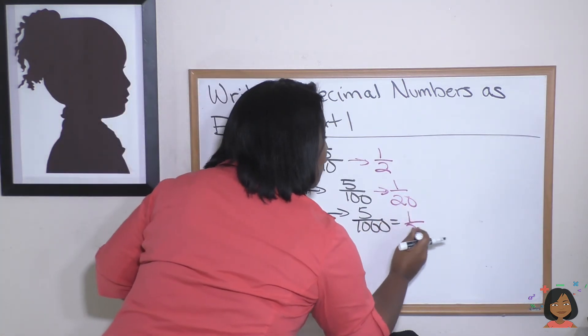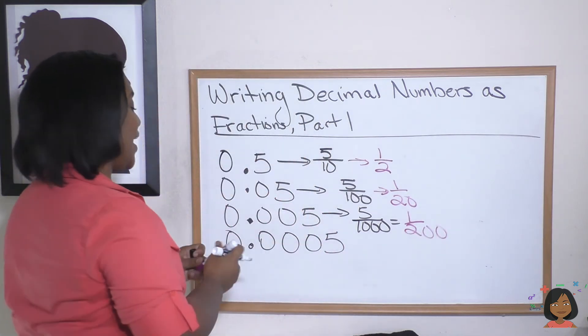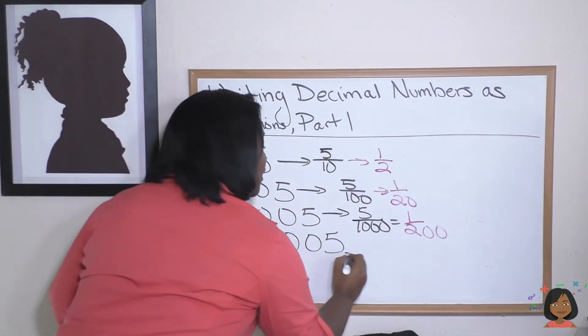Hopefully you're beginning to see a pattern here. And let's try one more. Here we have this five in the ten thousands place.